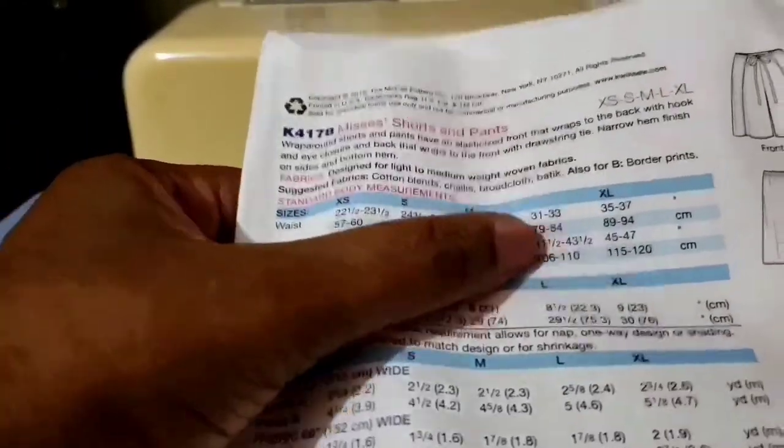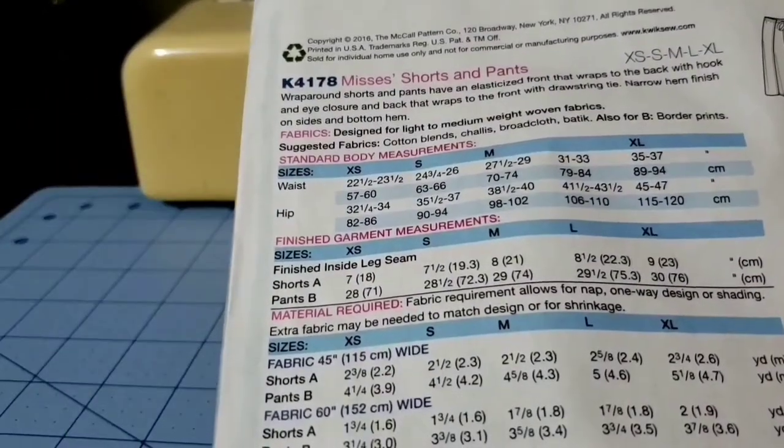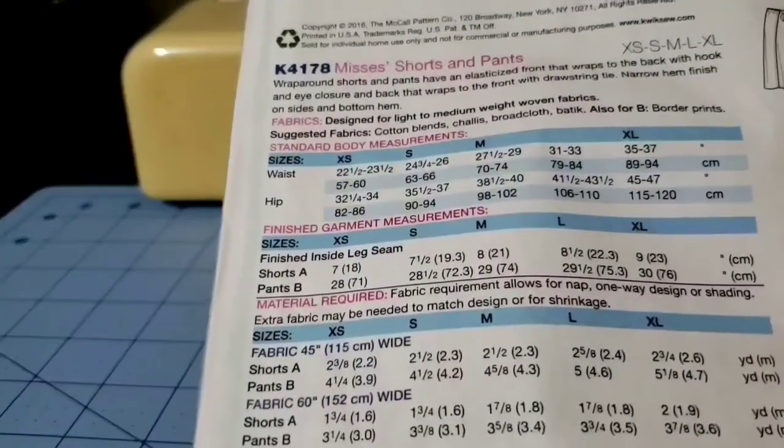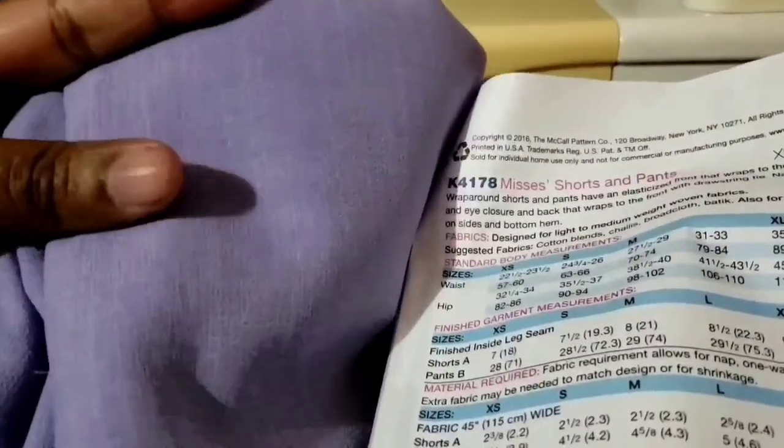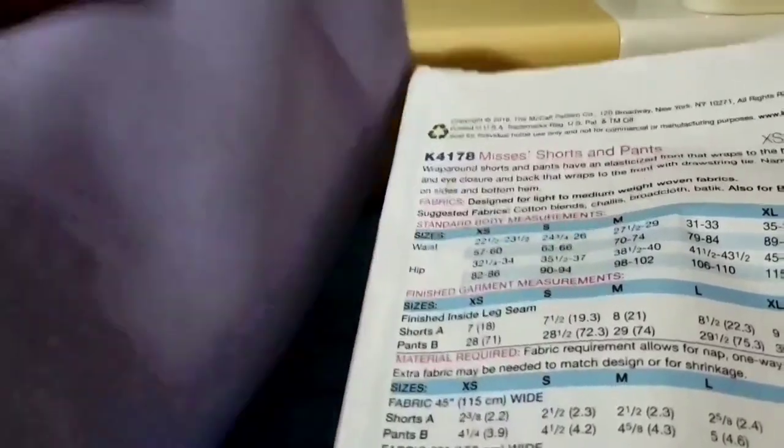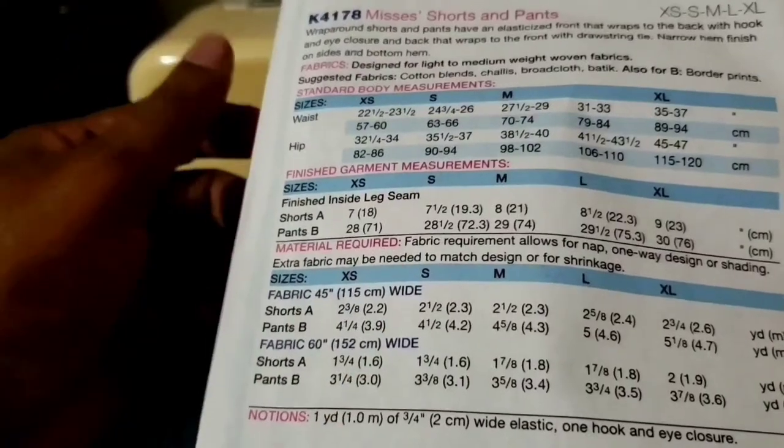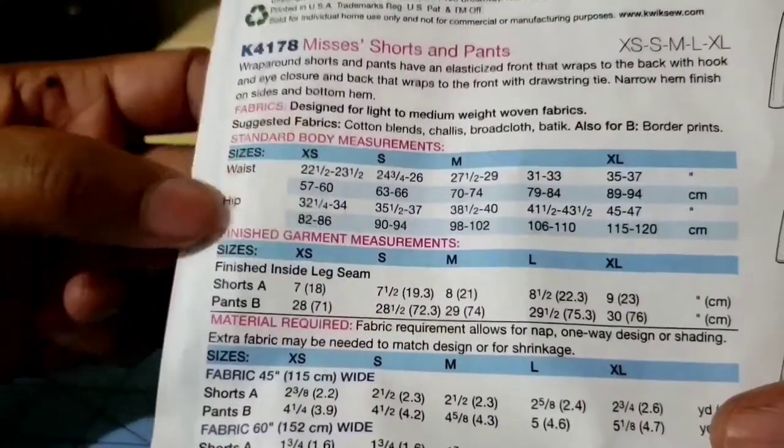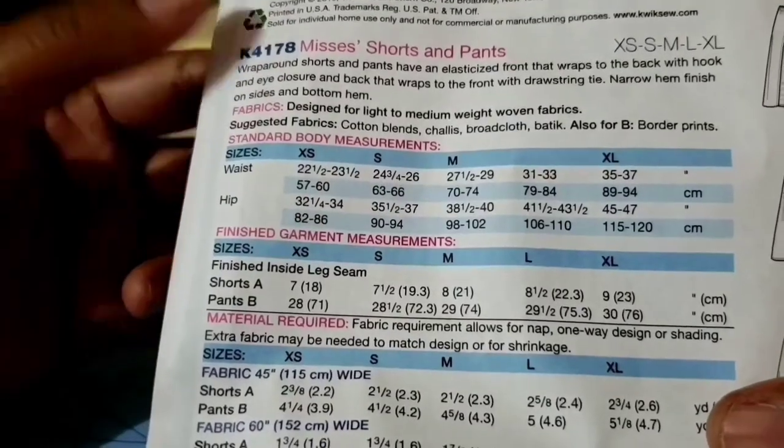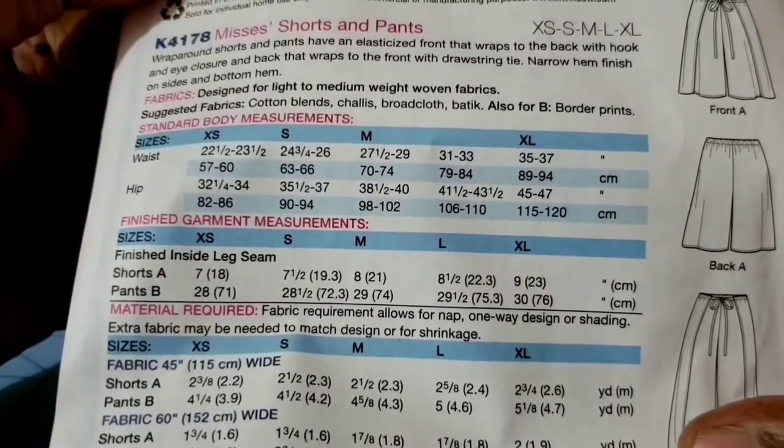I am using some leftover fabric that I made a jacket from. It's actually a very light linen blend - a lavender light linen blend solid color. So that's what I'll be using to make this wraparound shorts. The suggestions for fabrics are cotton blends, challis, broadcloth, and batiste.